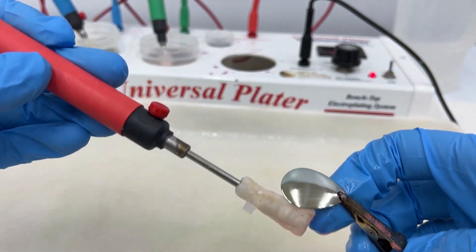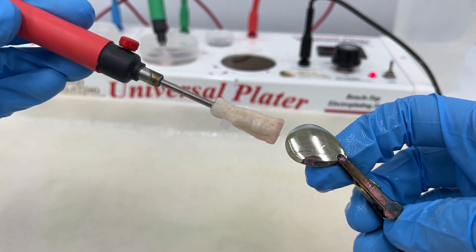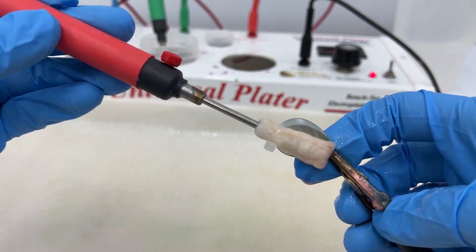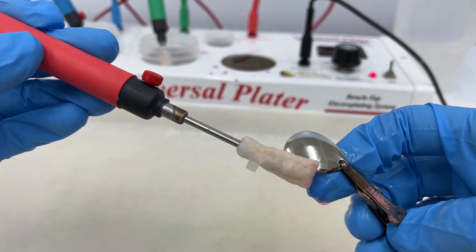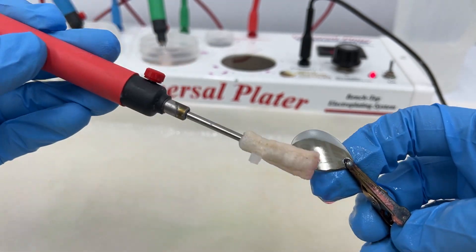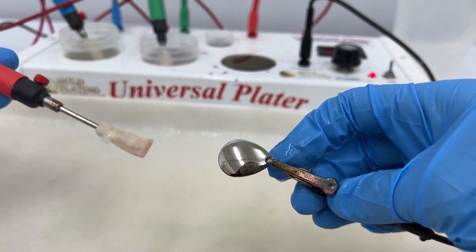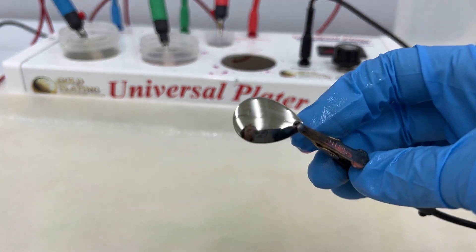There you go. Look how easy that is. And that's how to plate with the NC Silver.